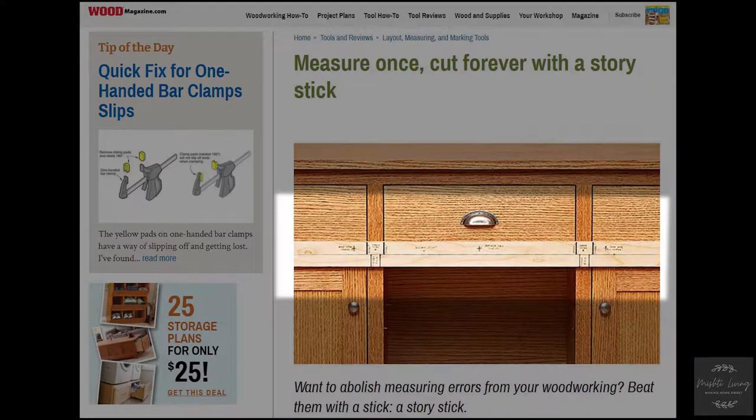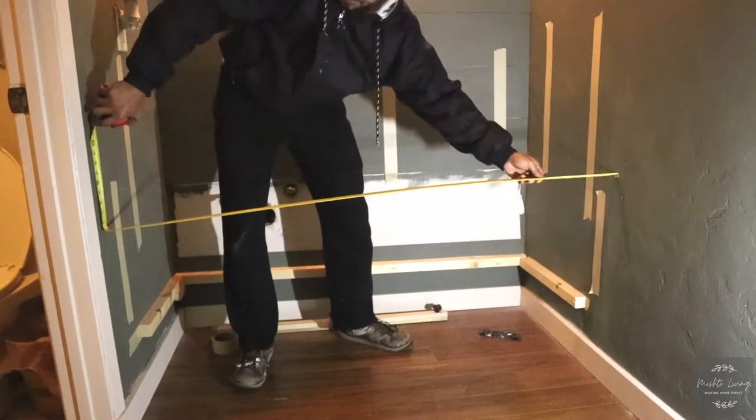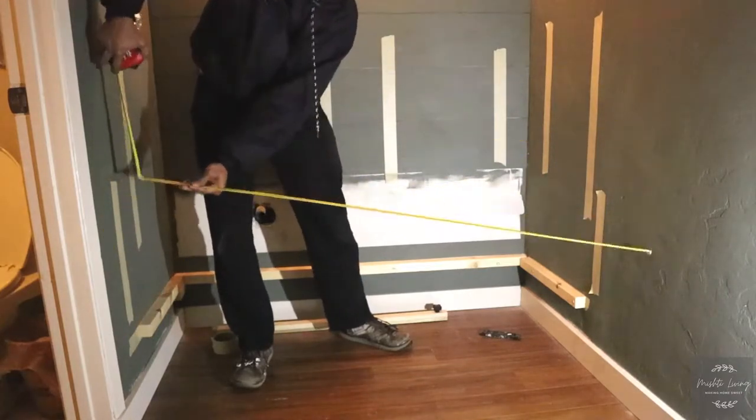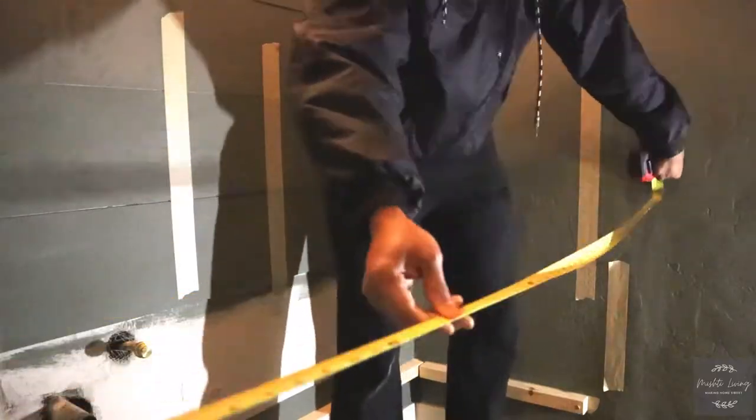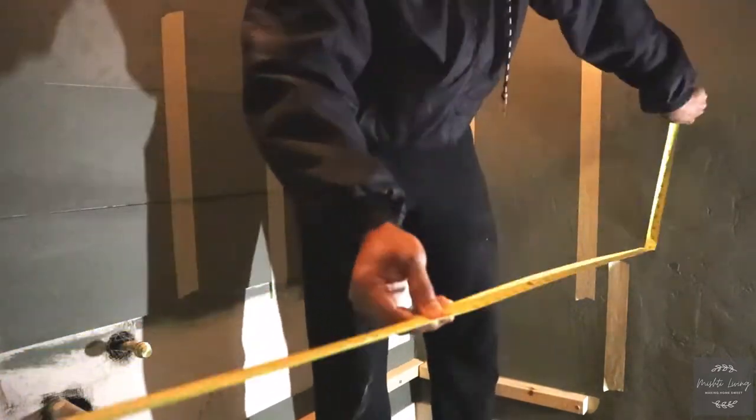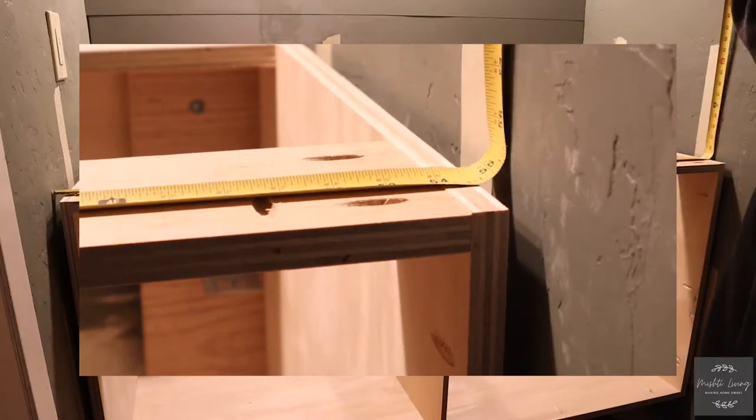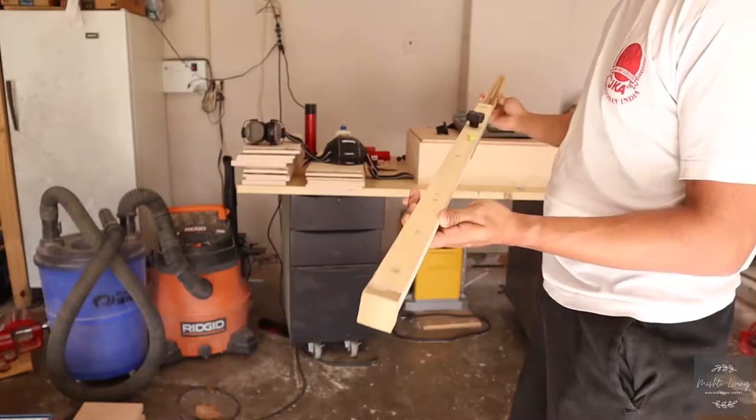A story stick or story pole is used to measure and mark critical measurements in full-scale proportions. If you try to measure between two walls, the measurement tape will not stay put, it bends and falls, and it's not horizontal. Even if you have a flat surface, you can't really measure exactly the distance between the walls.